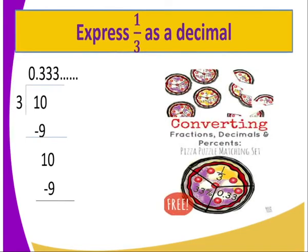Here you are required to express 1 over 3 as a decimal. The numerator is 1 and the denominator is 3. Using the long division method, we divide 1 by 3. Because 1 is not divisible by 3, we put 0 above and add a 0 to the 1 for it to become 10. At the end, we get 0.33333 — 3 is infinite — so we say it is 0.3 recurring.